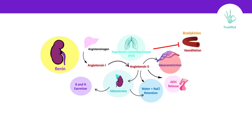If you can remember this diagram from the video of blood pressure regulation, we said that the kidney can feel low blood pressure and will respond by releasing renin, and renin will be converted to angiotensin that can raise the blood pressure. So let's imagine that this patient is already having high blood pressure and we want to lower it — it makes sense that if I blocked any of these steps, I can lower the blood pressure.